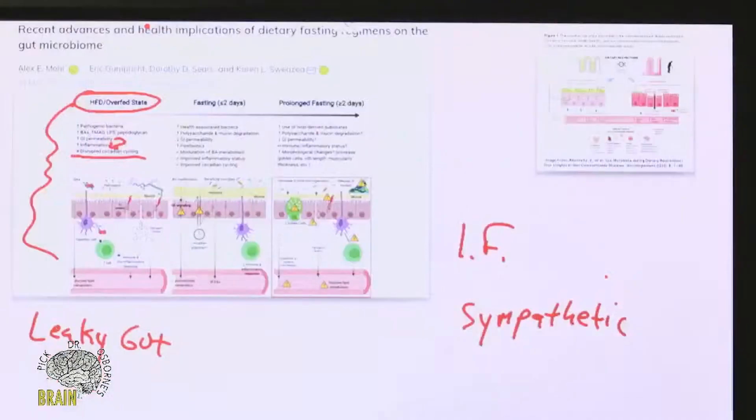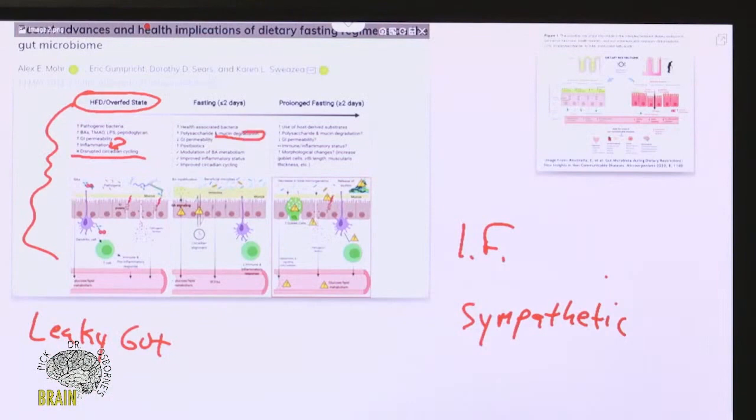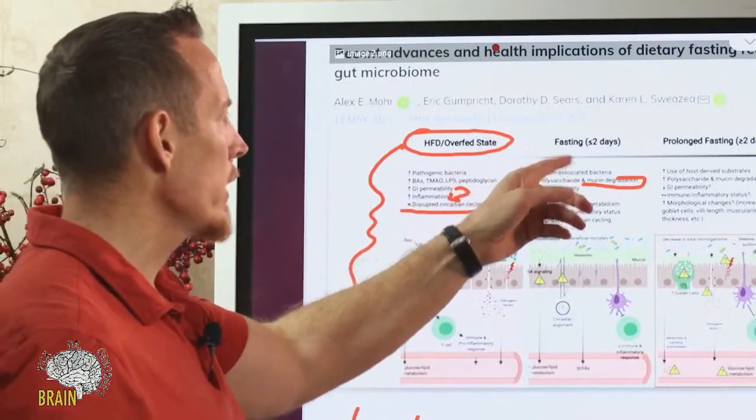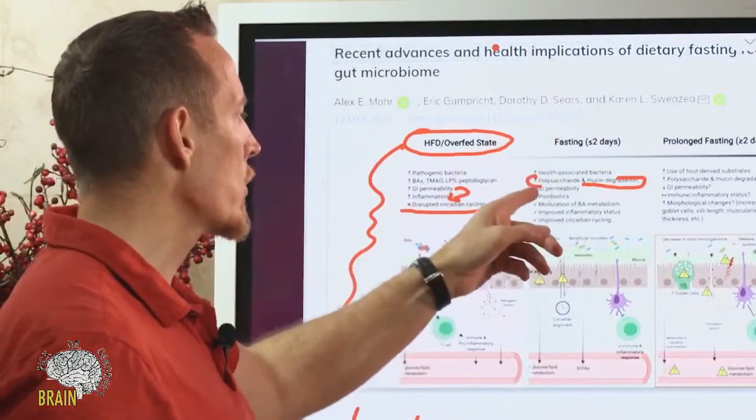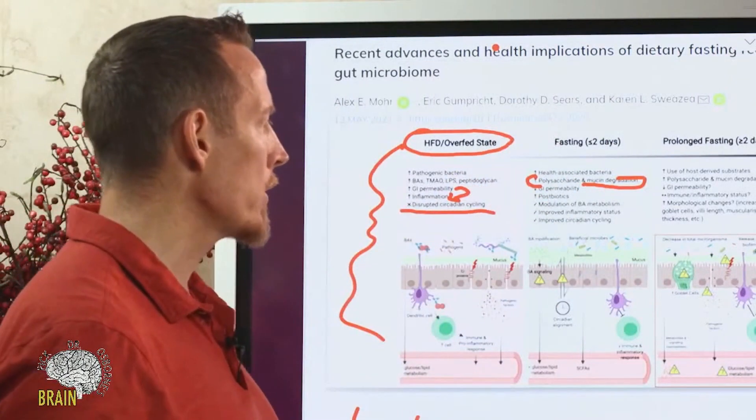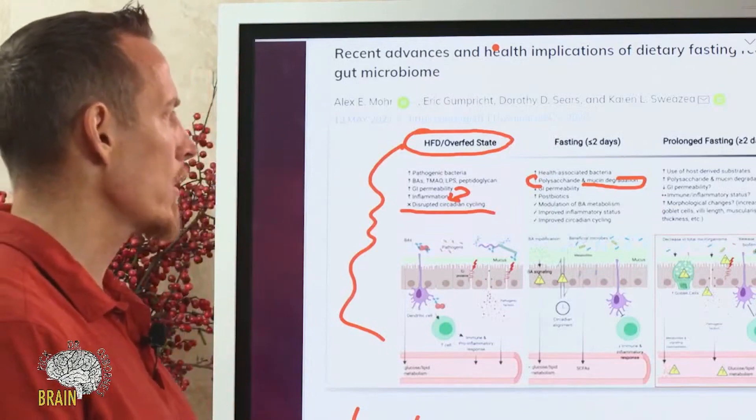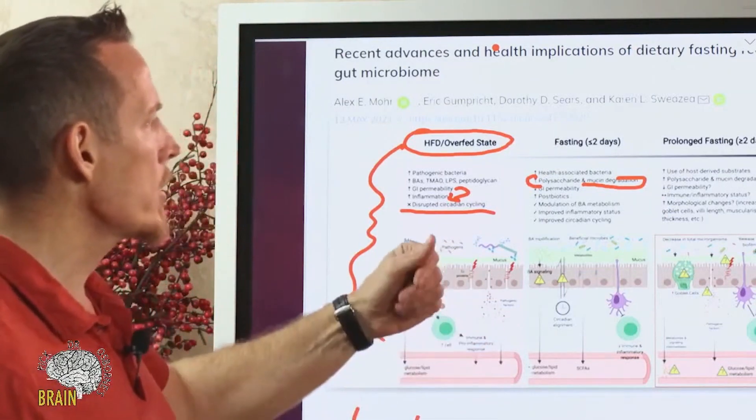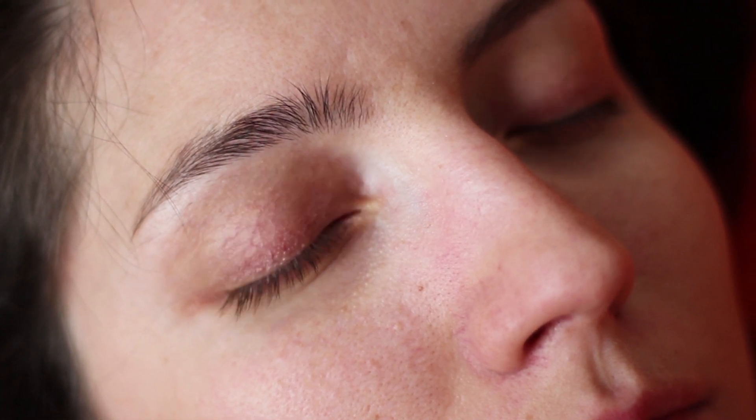These compounds here help seal your gut. We know that fasting for under two days improves your GI permeability. If you have leaky gut, it actually starts to help repair that. We know that it helps with the modulation of your inflammation. We know that it improves your sleep cycling. There are a lot of benefits with just under two days of fasting.